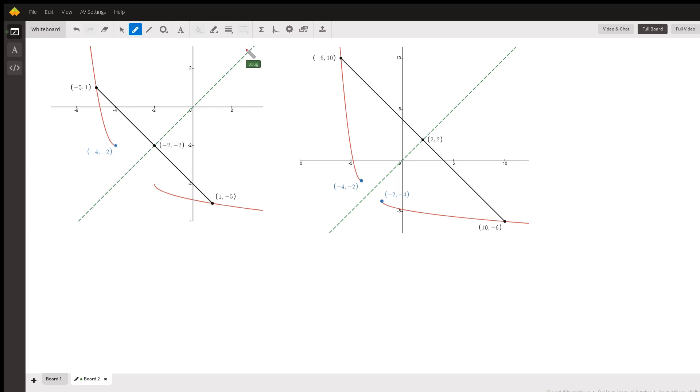the line y equals x, which is this green dashed line, is the perpendicular bisector of that segment. And this negative 2, negative 2 happens to be the midpoint of that black line segment.